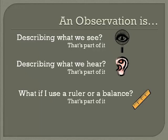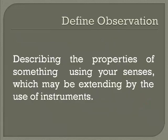What if I handed you a ruler and said, use this ruler to make an observation? Is the ruler part of observing? Yes, it is — it's called extending your senses. If you use any measuring device, you're just extending your senses to make an accurate observation. So we'll define an observation as describing the properties of something using your senses, which may be extended with the use of an instrument.